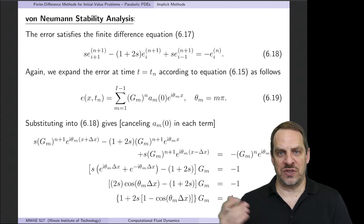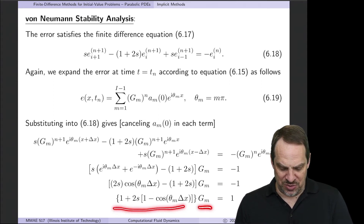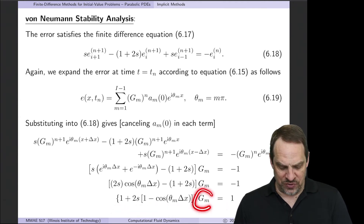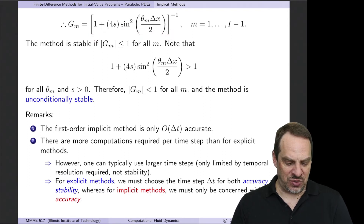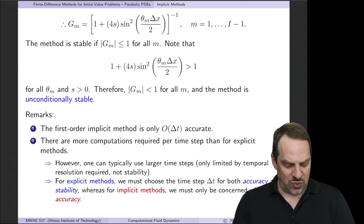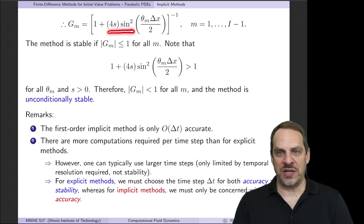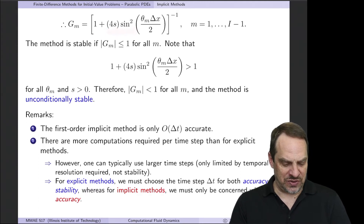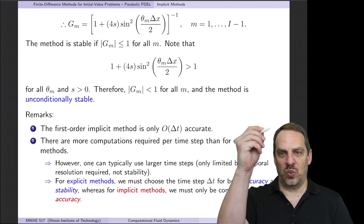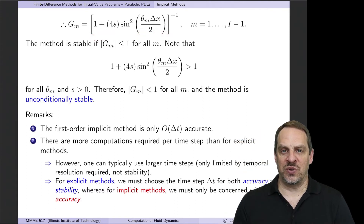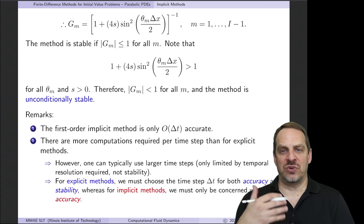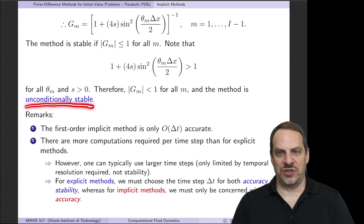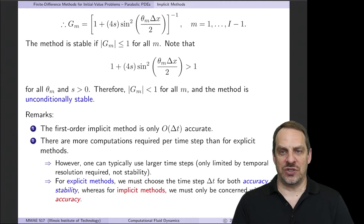We have something times g_m equal to 1, so solving for g_m gives 1 over that coefficient: 1 over (1 plus 4s sine squared(theta_m delta x / 2)). Since s is always positive and sine squared is always positive, the denominator is always greater than 1, so the gain is always less than 1 in magnitude. Therefore all modes are stable, and the first-order implicit method is unconditionally stable — there are no conditions for which it is unstable.